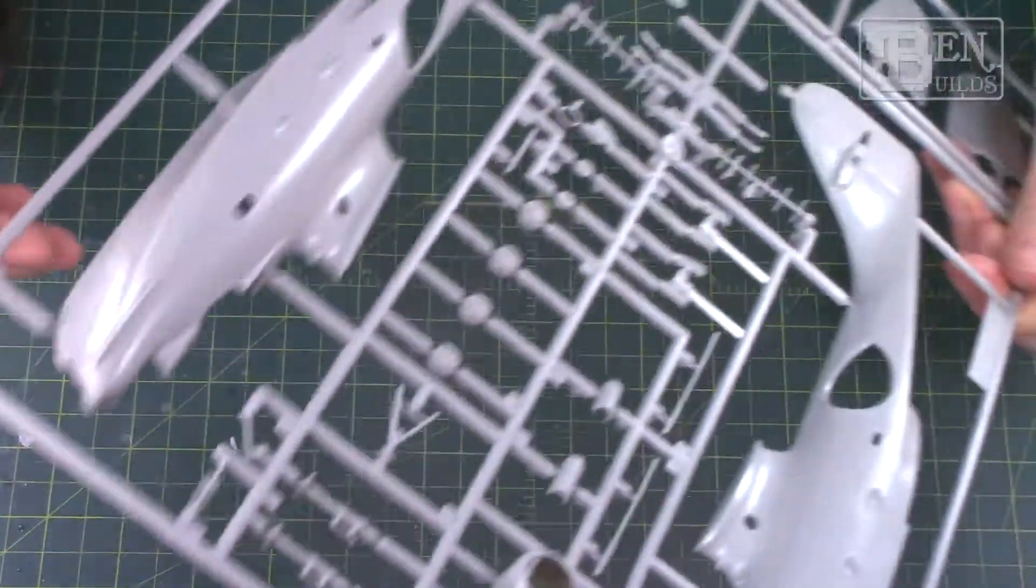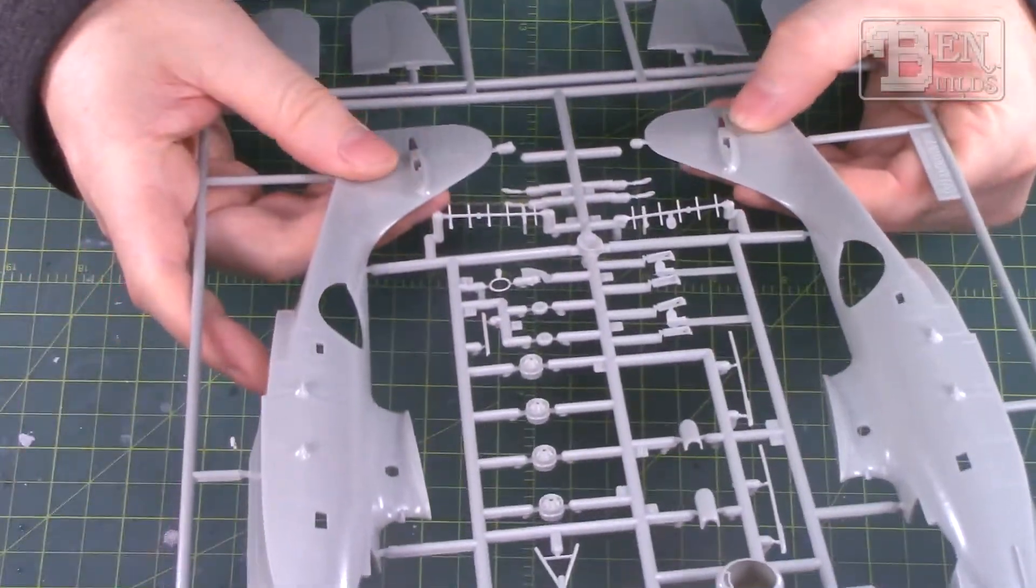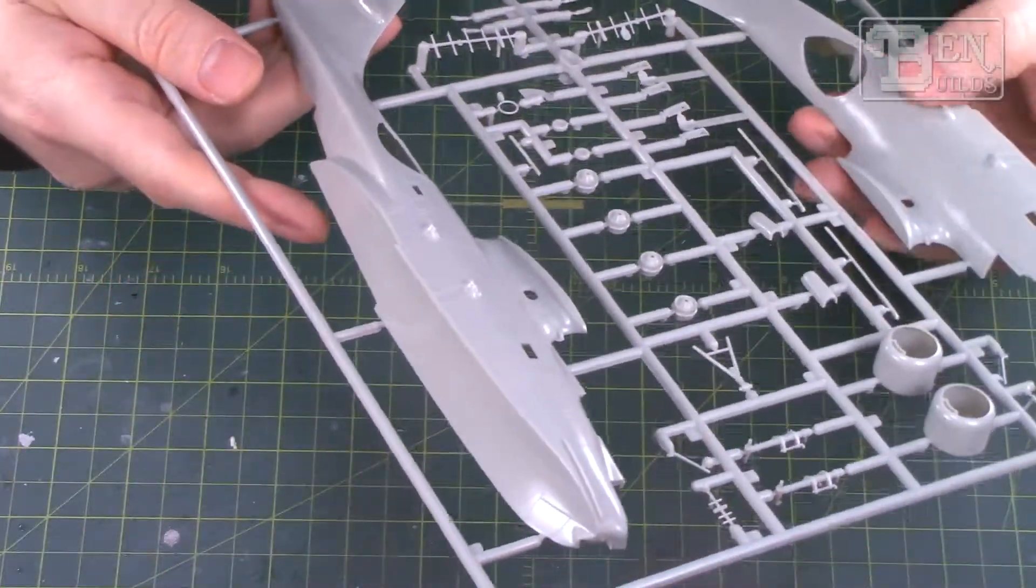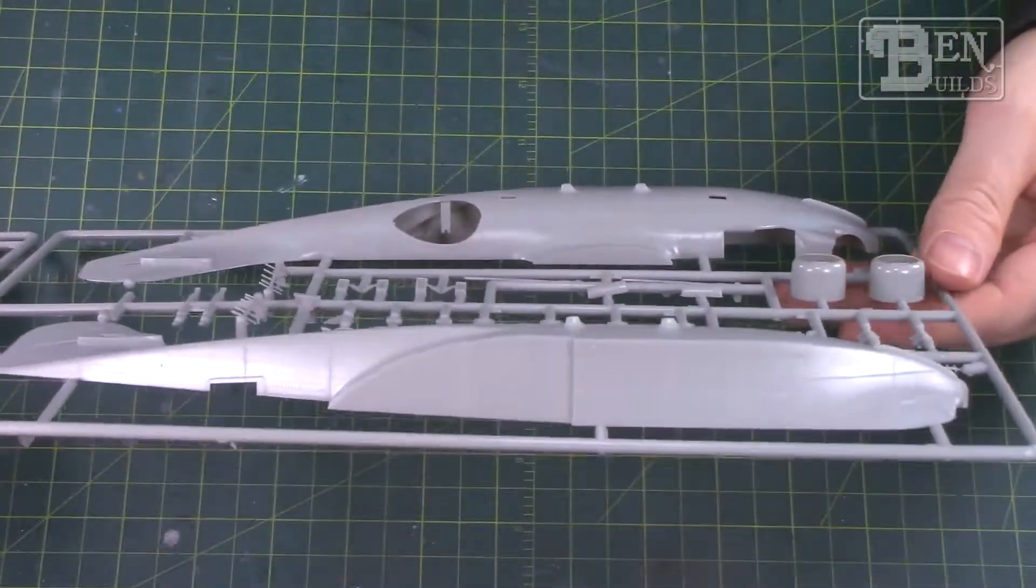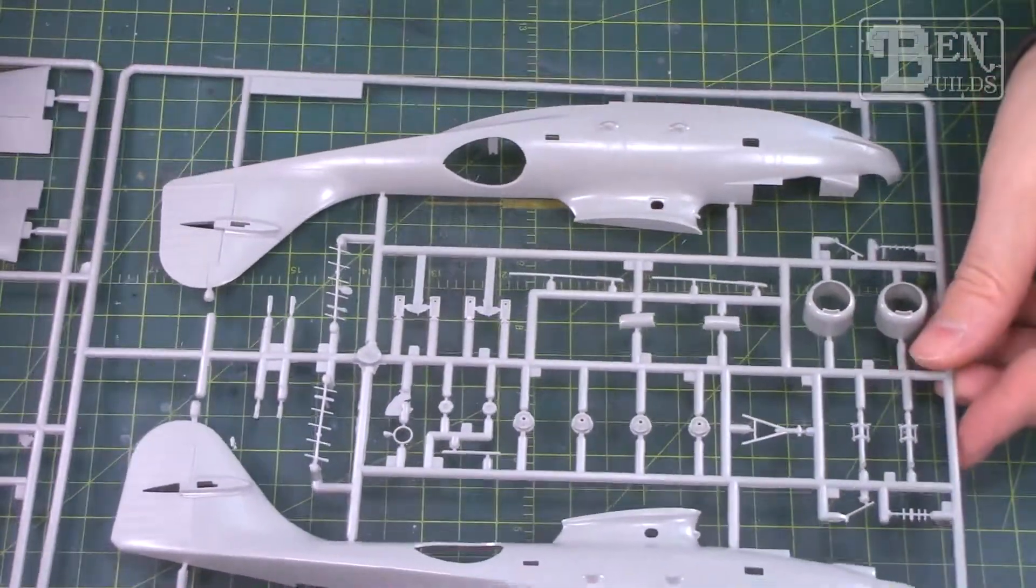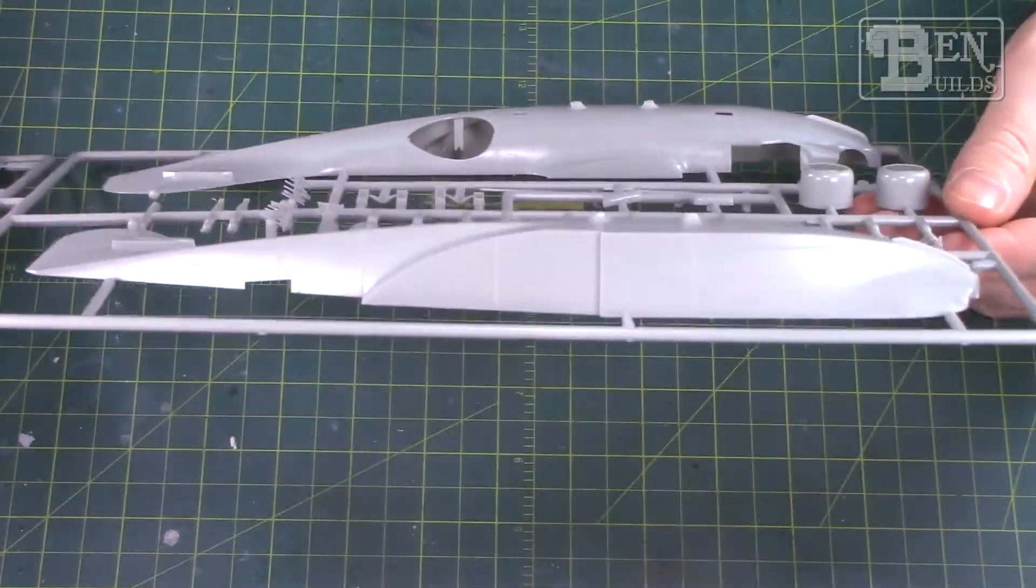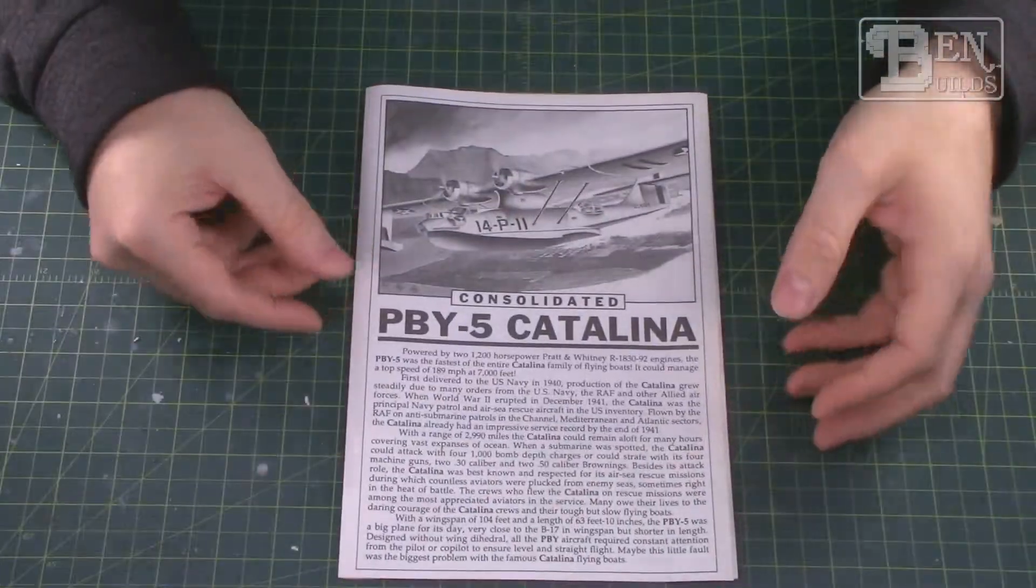Fuselage itself is, well, pretty big, I gotta say. Again, recessed panel lines, recessed rivet detailing. Overall a very nice looking kit. I don't know how it fits of course, but we'll check out that when we get to that point, but I'm excited. This looks pretty cool.